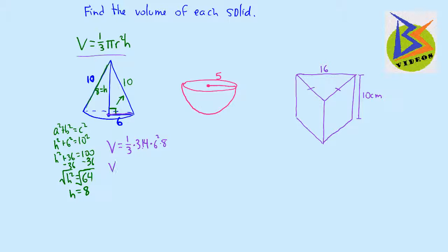So we say volume equals 1/3 times 3.14 times 6 squared is 36 times 8. And so we will take 3.14 times 6 squared times 8, and we get 904.32. So we get 1/3 times 904.32, and then we'll divide that by 3 and get 301.44 cubic units.